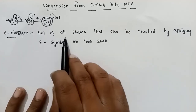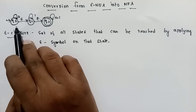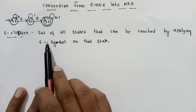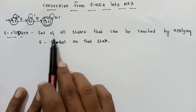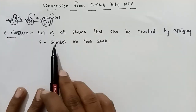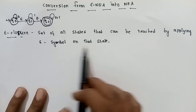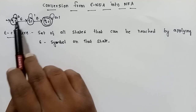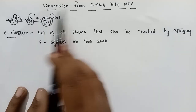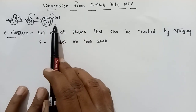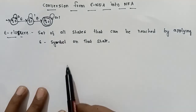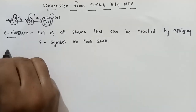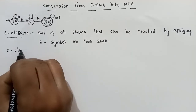Epsilon Closure is a set of all states that can be reached by applying the epsilon symbol on a given state. So, a particular state can be found in its Epsilon Closure if it can be reached by applying epsilon transitions. First, we find out the Epsilon Closures for the states in the epsilon NFA.